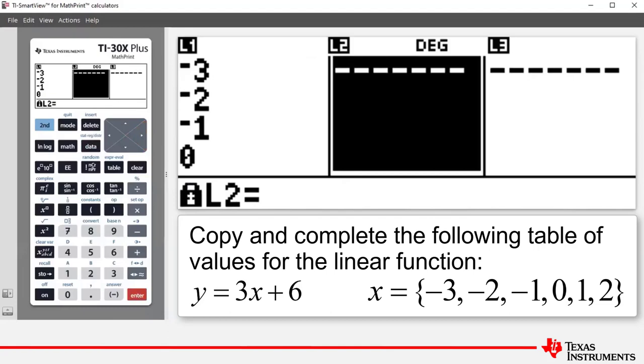And what we're going to say now is we're going to say that any entry in list 2 is going to be 3 times the corresponding value in list 1 plus 6. So in other words, we're going to build a formula. So what we do now is we enter 3, press the multiplication key.